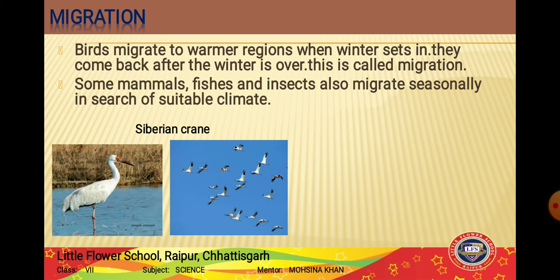When winter starts in Siberia, it gets extremely cold and the Siberian cranes fly thousands of kilometers to warmer places in India, such as Bharatpur in Rajasthan, Sultanpur in Haryana, and other parts of India. They stay in India for a few months and then fly back to Siberia when the winter ends and conditions become favorable again.